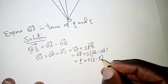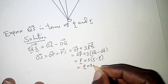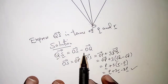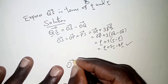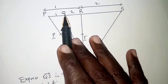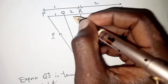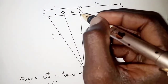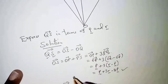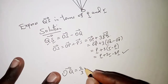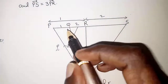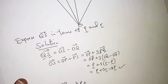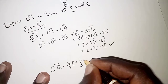Opening the brackets gives OS equals p plus 3r minus 3p. Next we look at OQ. Using the ratio theorem, from O to Q with ratio 1 to 2, we get OQ equals (2/3) times vector p plus (1/3) times vector r.